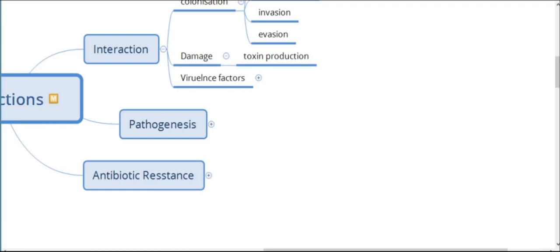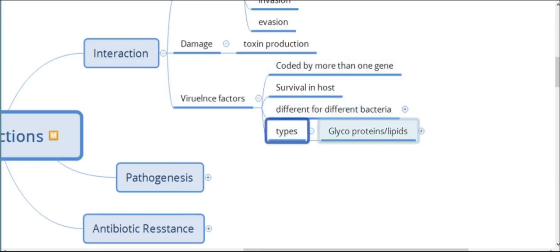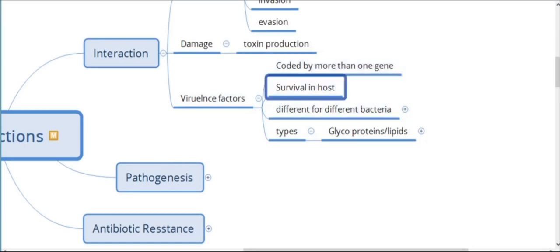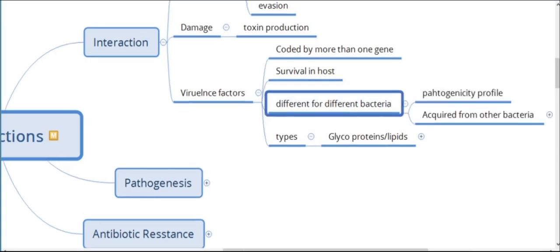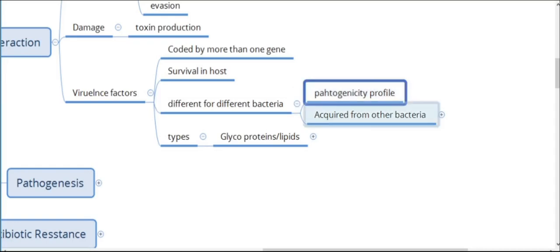These mechanisms involve various genetic apparatuses used by the bacteria, and they differ for different bacterial species and even for different strains of the same species. The factors that help in colonization, production of toxins, or survival in the host are called virulence factors. Virulence factors may be coded by more than one gene and are usually glycoprotein or lipid in nature, giving different pathogenicity profiles for different organisms causing infection.